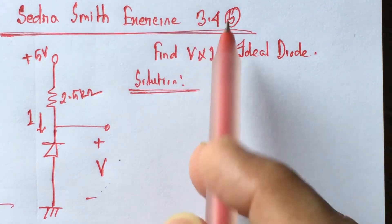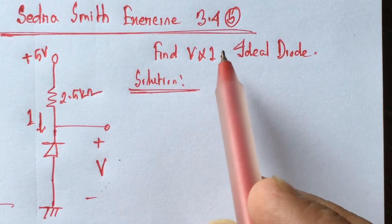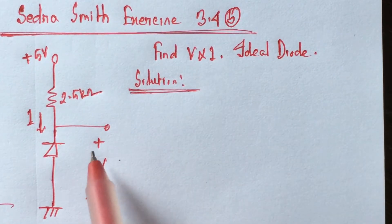Hi viewers, Dodo will solve exercise 3.4B from Sandra Smith. Here we have to identify the voltage V and I for the circuit.